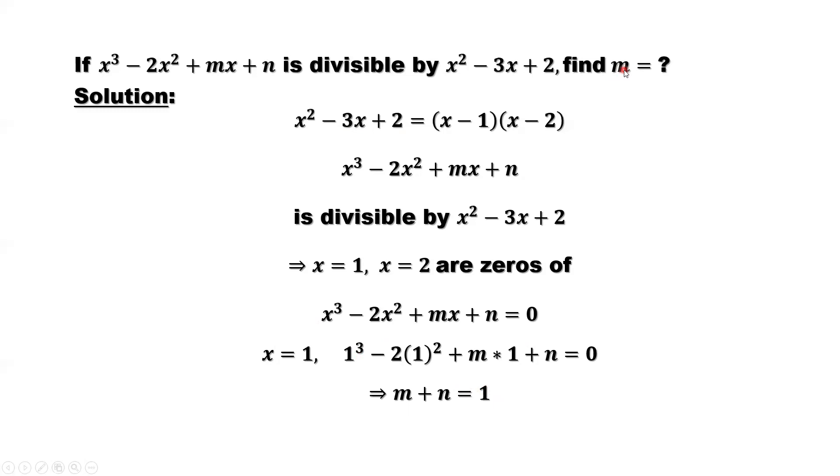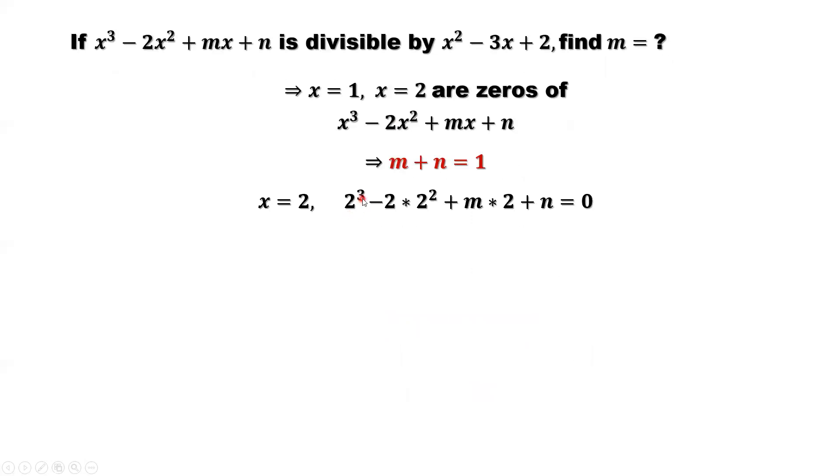We want to find m, we don't want n. We should get rid of n. We can also replace x here by 2 to get another result. 2 to the power 3 minus 2 times x squared plus m times 2 plus n equal to 0. We have two results. The second one minus the first one, we will cancel n to get m only. So 2m minus m is 1m, m minus n is 0, 0 minus 1 is negative 1. We have this result. Simplify, we will have m equals negative 1.